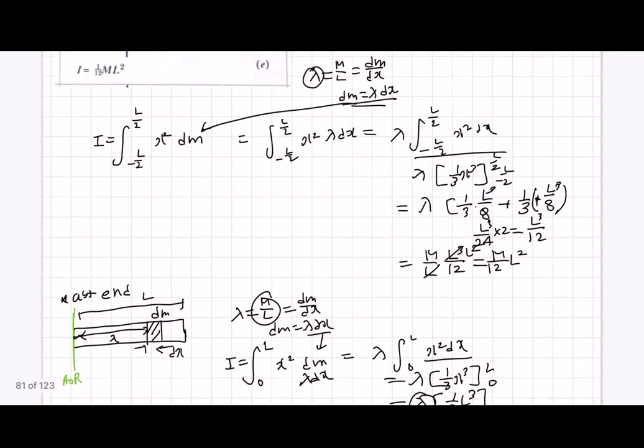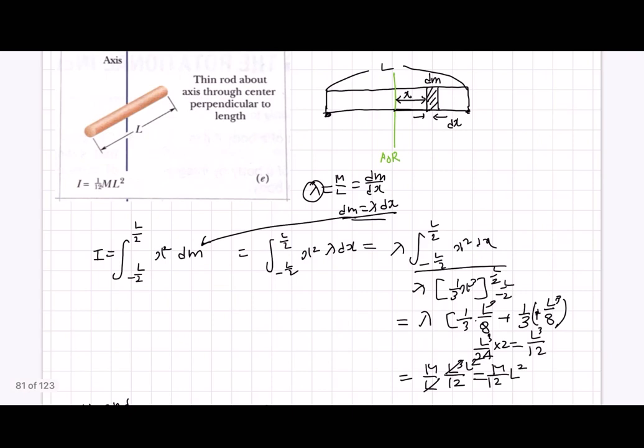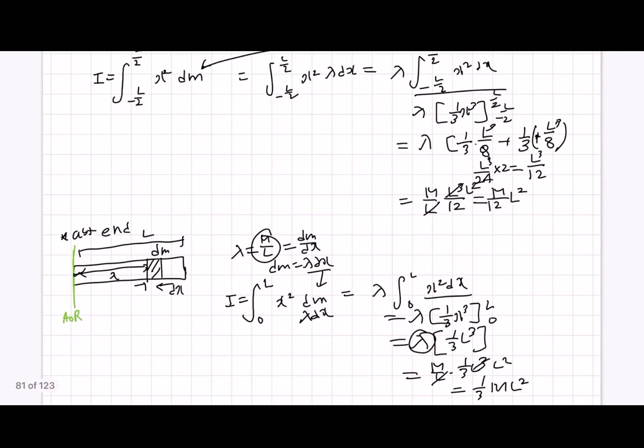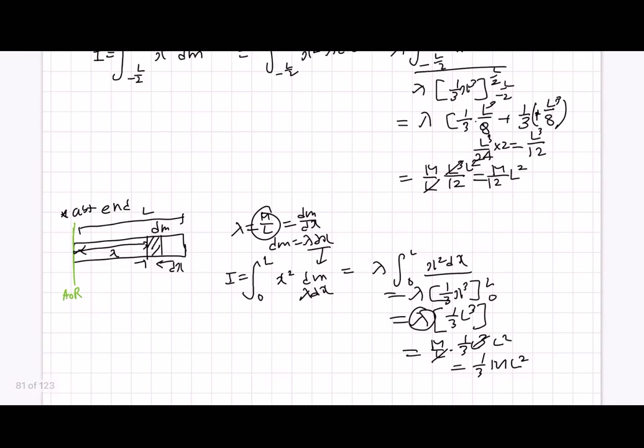So in this video, we have solved how to derive the moment of inertia for a thin rod about an axis through the center perpendicular to its length, and also, additionally, if the axis is at the end. Thanks for watching, and see you in the next video!